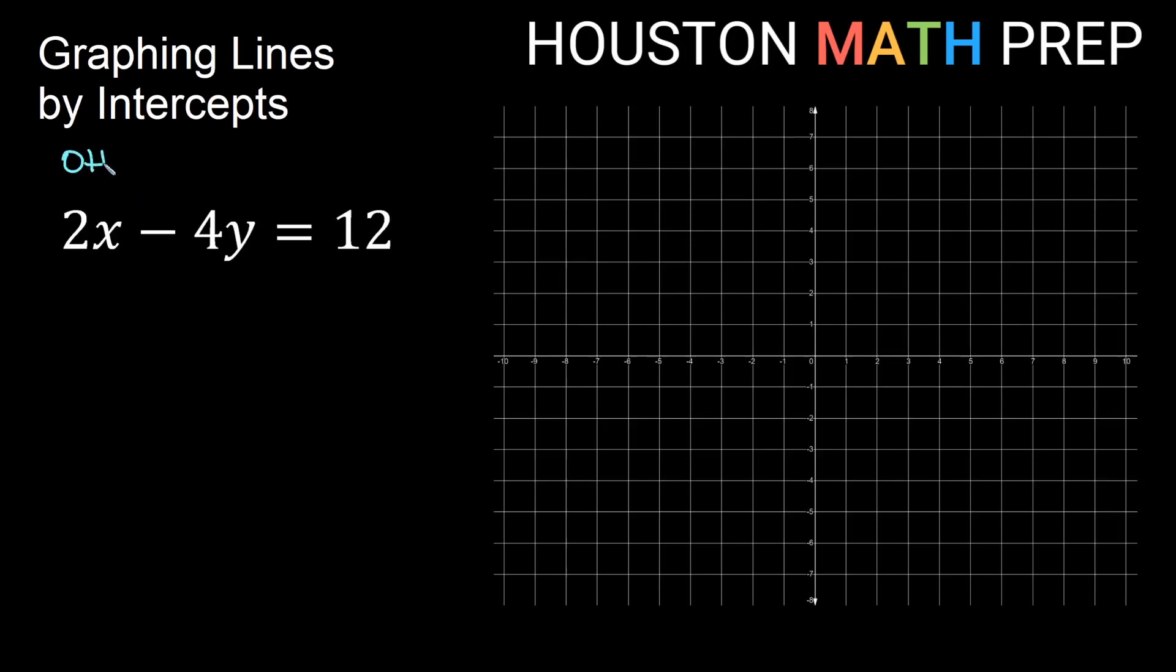Now remember that an intercept in our xy plane is going to be when the other variable is equal to zero. We'll be on an axis and that means the other variable will be equal to zero. So when we're on the x-axis that means y is equal to zero, and when we're on the y-axis that means x is equal to zero. If I want to find the x-intercept then I'm going to set y equal to zero. If I want to find the y-intercept then I will set x equal to zero and I'll be able to find that intercept.